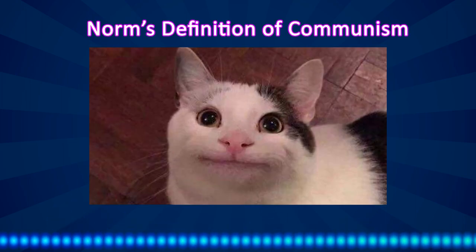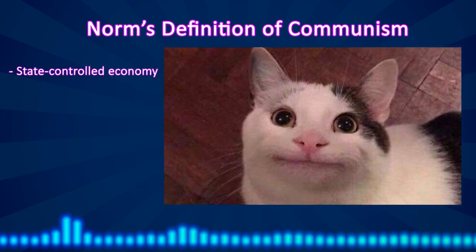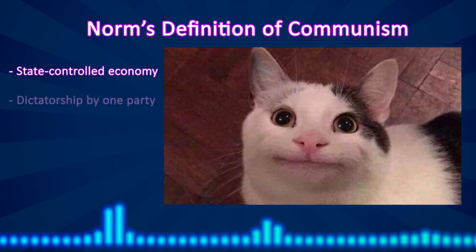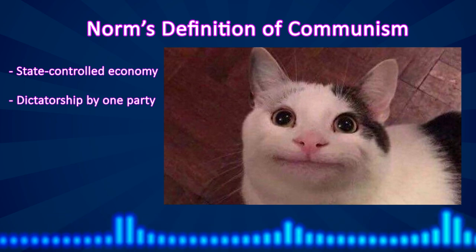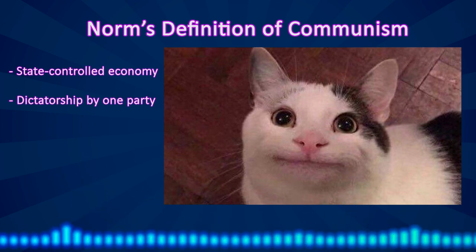Well, that's obvious, says Norm. Communism is a society with a centrally planned economy that's controlled by the state, and a state that's controlled by a dictatorship of a single political party. And also, communist regimes don't allow most civil liberties, and are quick to silence and punish those who express dissent and opposition. Thank you, Norm, for explaining to us what the average random person on the street thinks.